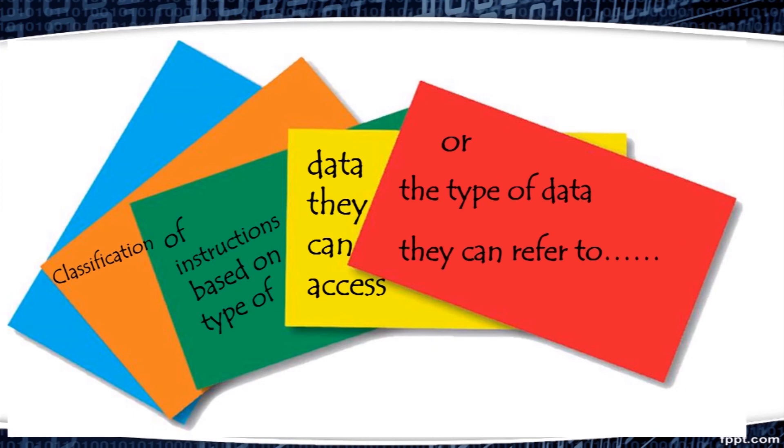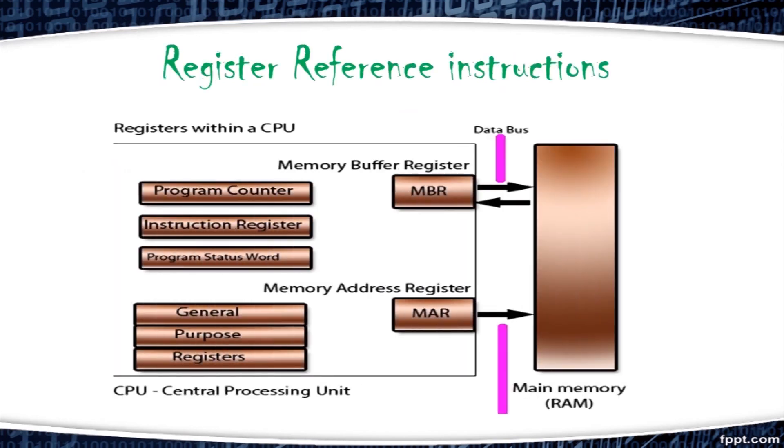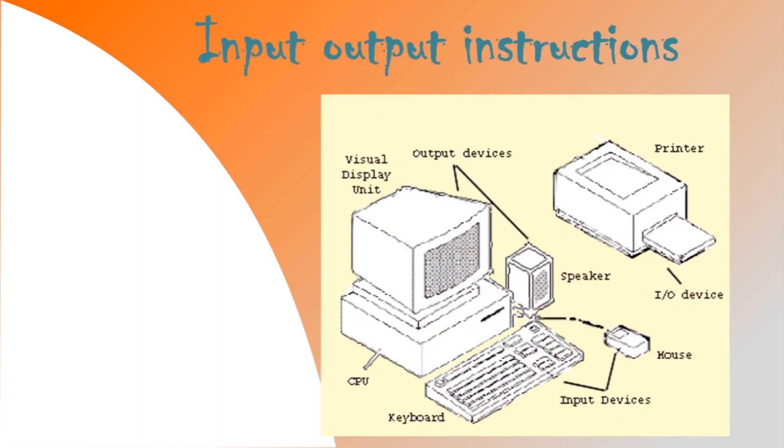The third one is classification of instructions based on type of data they can access or the type of data they can refer to. According to this, instructions are divided further into three categories. Memory reference instructions, register reference instructions and input output instructions.